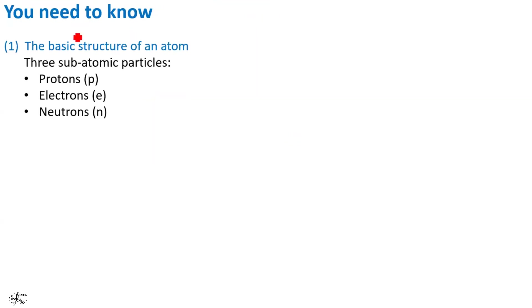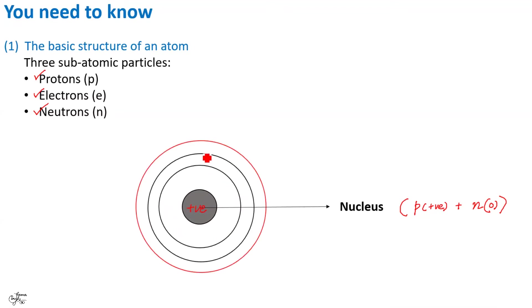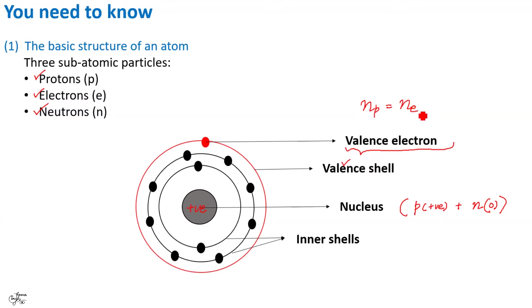First of all, let us recall the basic structure of an atom. An atom consists of three subatomic particles, namely protons, electrons and neutrons. The nucleus or the center of the atom contains protons which are positively charged plus neutrons which carry no charge or are neutral in nature. Thus, nucleus is positively charged. Surrounding the nucleus are the electron shells which contain fixed number of negatively charged electrons. The outermost shell of the atom is known as valence shell and the electrons present in it are known as valence electrons. Students remember that the number of protons is equal to number of electrons and therefore atom as a whole is neutral in nature.